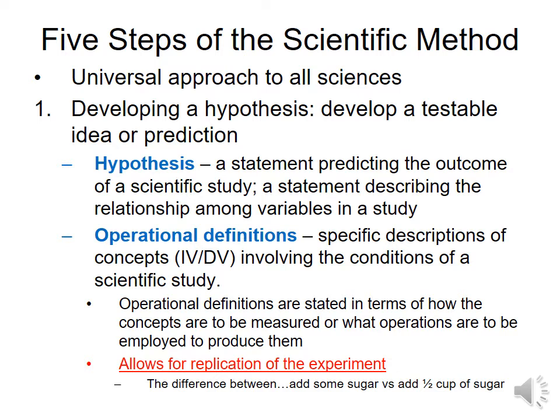Much of what we're looking at for the scientific method should be a review for you. On the test, if you see anything that talks about two variables being tested against each other, you're looking at a hypothesis. For the scientific method, the very first step is developing a question, developing a statement, and having a focus for your research. The statement has to describe the relationship between variables — often between an independent and a dependent variable — but at minimum two variables must be involved. Both the independent and the dependent variable have to have operational definitions.